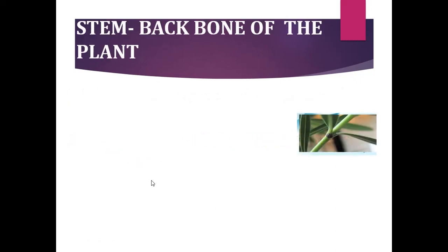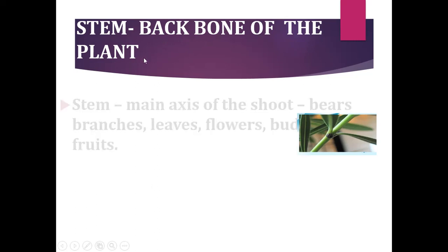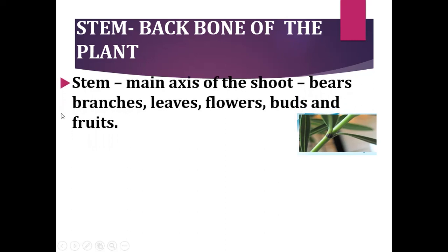Stem is called as the backbone of the plant. It is the main axis of the shoot that bears branches, leaves, flowers, buds and fruits. The parts of a typical stem are node, internode, apical or terminal bud, and axillary bud. So there are four main parts in the stem.